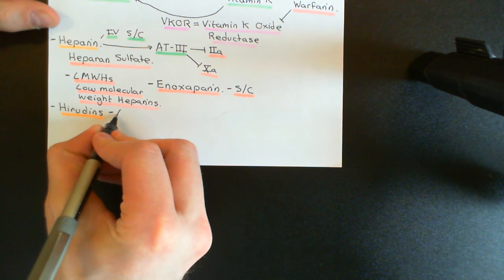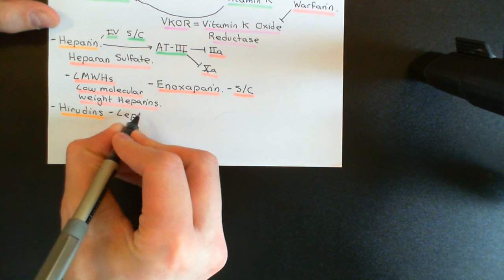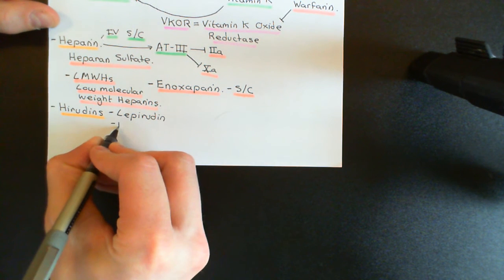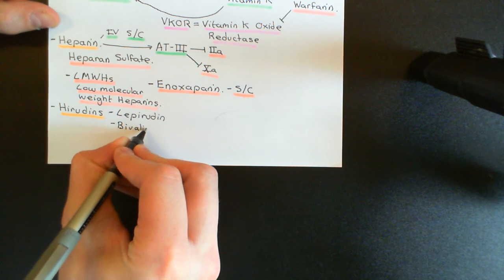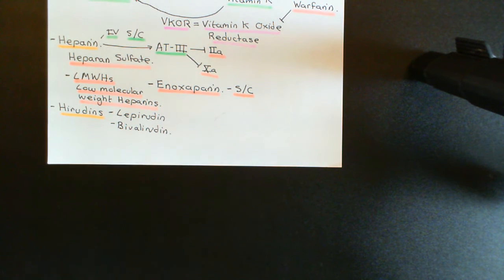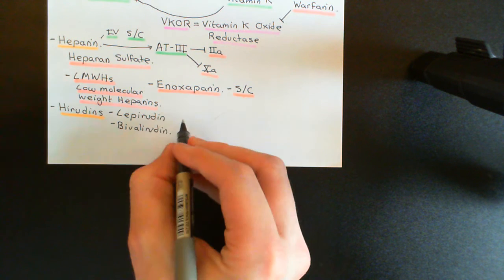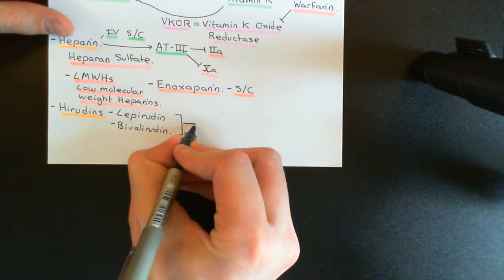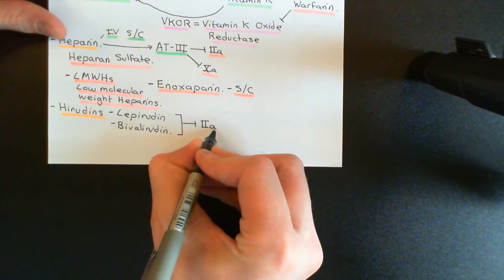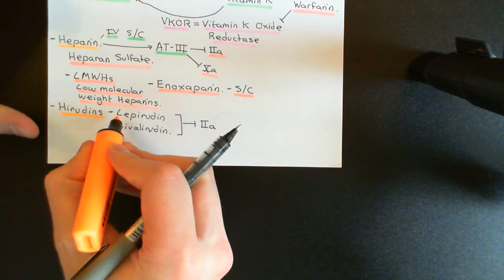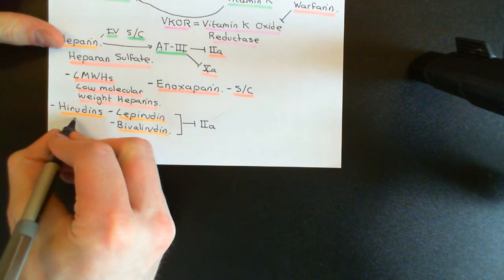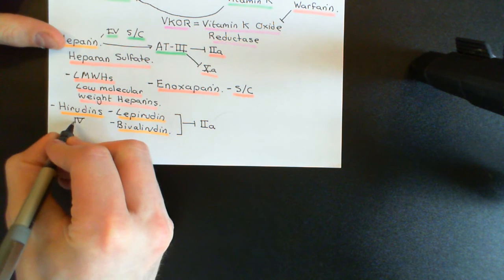Examples of hiridins are lepirudin and bivalirudin. These two examples of hiridins work by inhibiting factor 2A — they inhibit thrombin — and that's how they have their anticoagulant effect. Both of these drugs have to be given by intravenous injection.